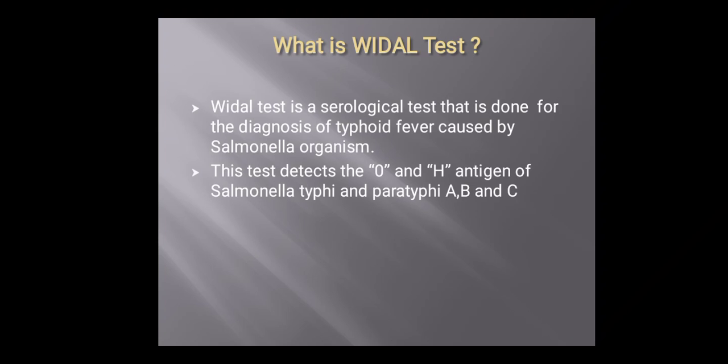This test facilitates the quantitative estimation of antibodies to Salmonella antigen in human serum by slide and tube agglutination tests. The main principle is that when the colored and attenuated antigen suspension is mixed with patient serum, anti-Salmonella antibodies present in the serum react with the antigen suspension to give agglutination. Agglutination is a positive test result indicating the presence of anti-Salmonella antibodies, whereas the negative test is indicated by absence of agglutination.